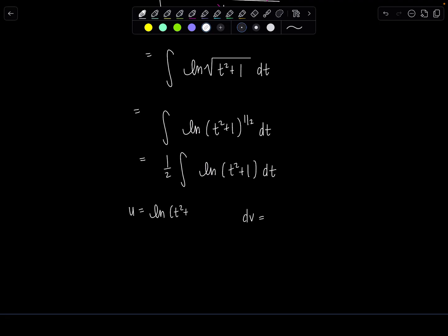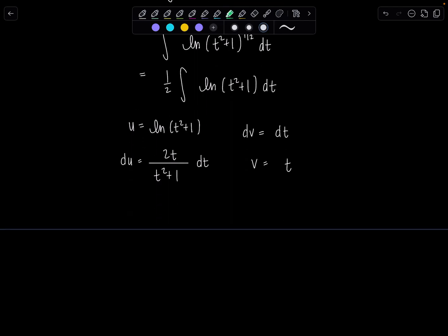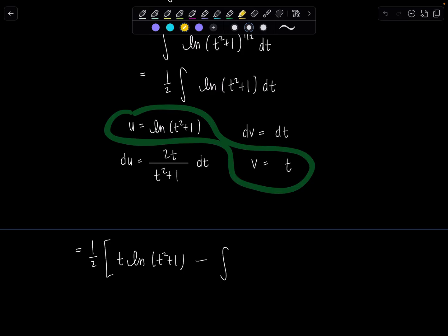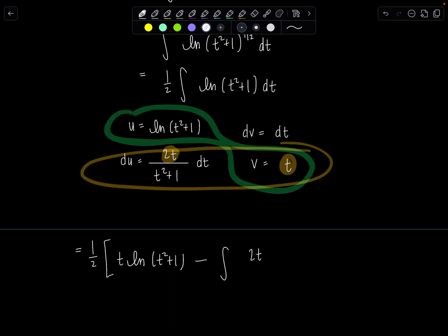For integration by parts, u equals natural log of t squared plus 1, and dv equals dt. Then du equals 1 over t squared plus 1 times 2t dt, and v equals t. Applying the IBP formula with the one half out front: one half times t ln(t squared plus 1) minus the integral of t times 2t over t squared plus 1, dt.